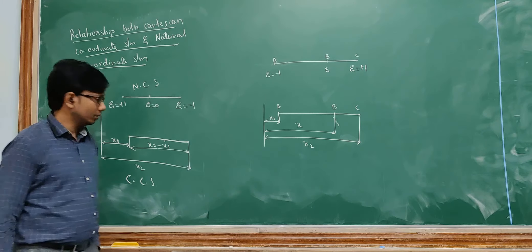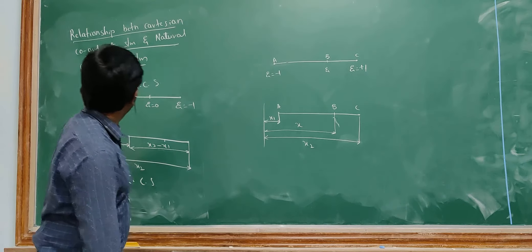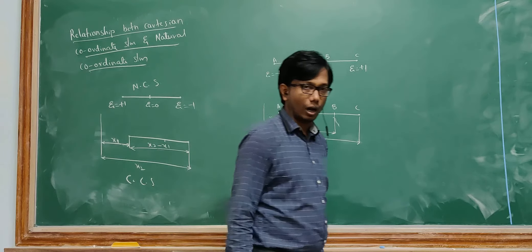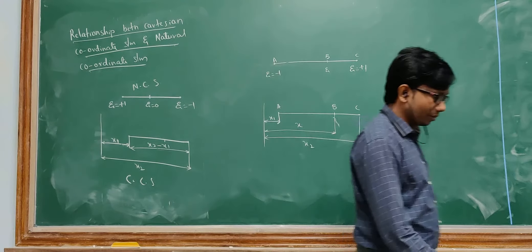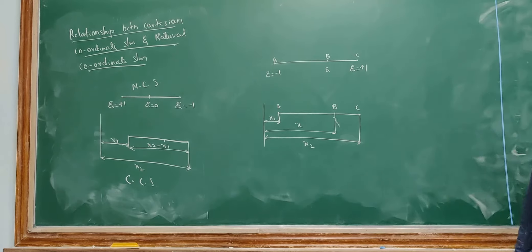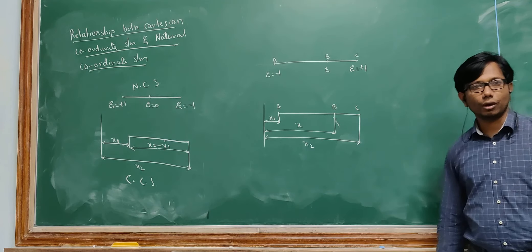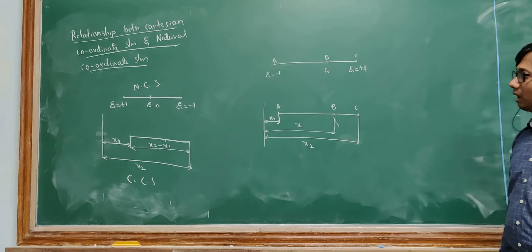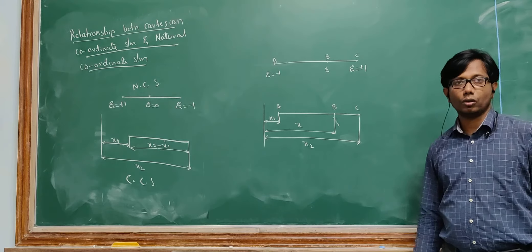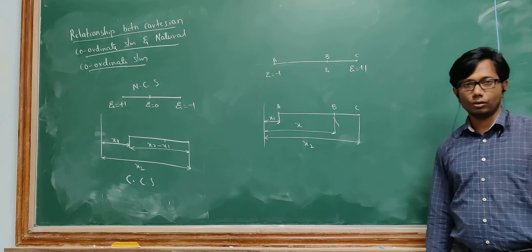Hello everyone. Today we will be seeing how to derive a relationship between a Cartesian coordinate system and natural coordinate system. In the previous session you have studied what do you mean by a Cartesian coordinate system, what is a local coordinate system and what is natural coordinate system.